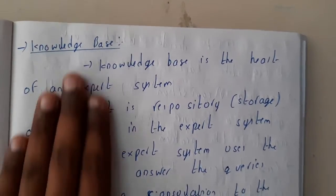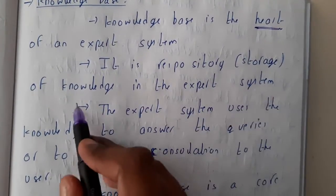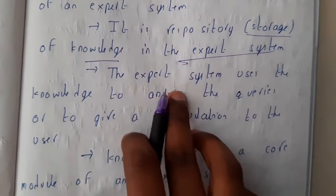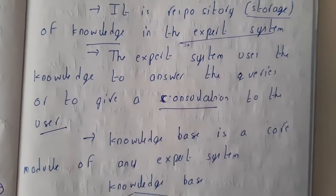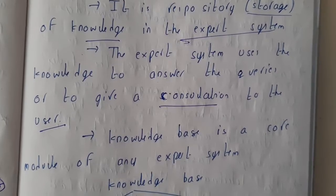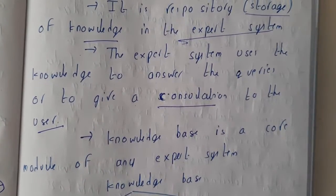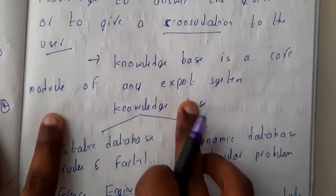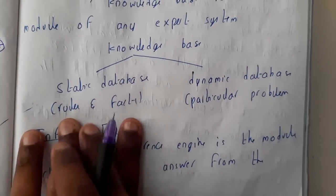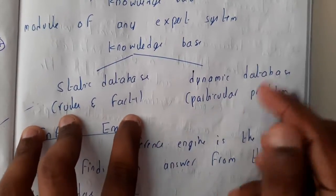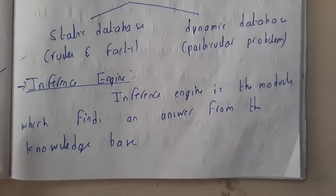Now let's go through the formal definitions. The knowledge base is the heart of the expert system — it is responsible for storage of knowledge. The expert system uses this knowledge to answer queries or give conclusions to the user. It is the core module and is of two types: static database, consisting of rules and facts, and dynamic database, representing the particular problem currently in progress.